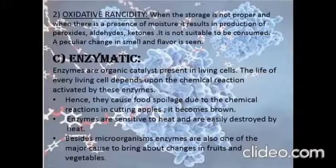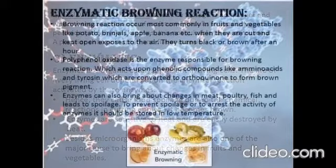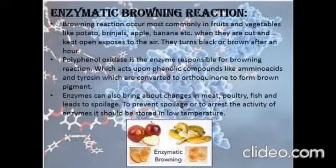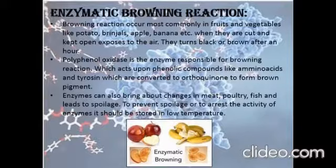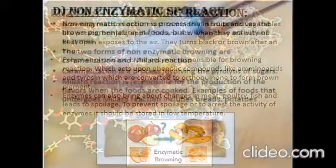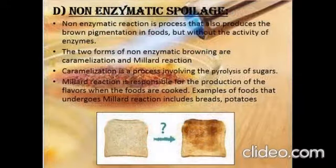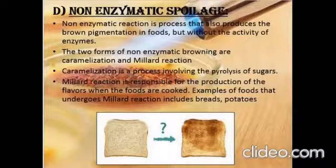Enzymatic browning reaction occurs in most fruits and vegetables like potatoes, brinjals, apples, bananas, etc. When they are cut and kept open, exposure to air turns them black or brown in color. Polyphenol oxidase is the enzyme which acts upon tyrosine, an amino acid, which gets converted to orthoquinone to form a brown pigment. Non-enzymatic browning reaction: browning pigmentation also occurs without enzyme activity, in two forms — caramelization, which involves pyrolysis of sugars, and the Maillard reaction, when foods get heated up.